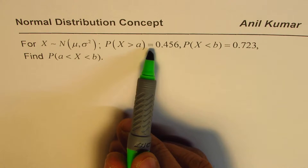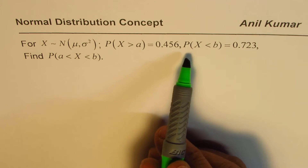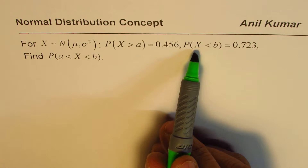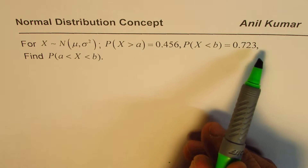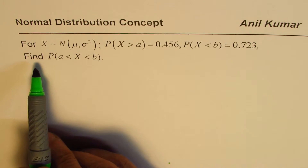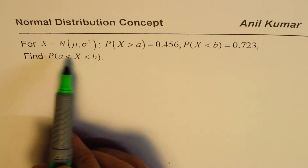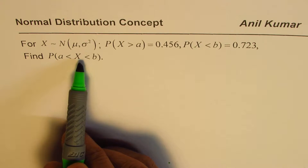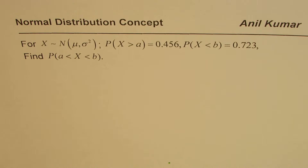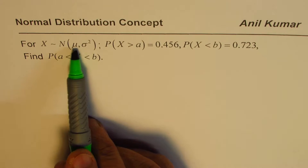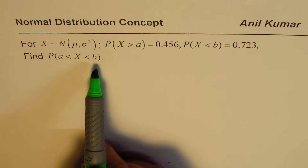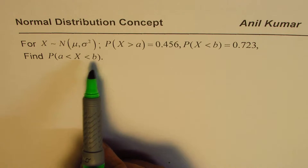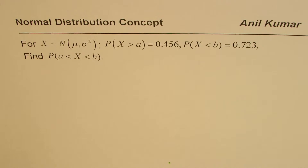The probability for the random variable to be greater than A is 0.456, and the probability for the random variable to be less than B is 0.723. The question is to find the probability of the random variable being between A and B. The difficult part is that we are not given any particular distribution, and we don't know what A and B are — but we can still find the solution.